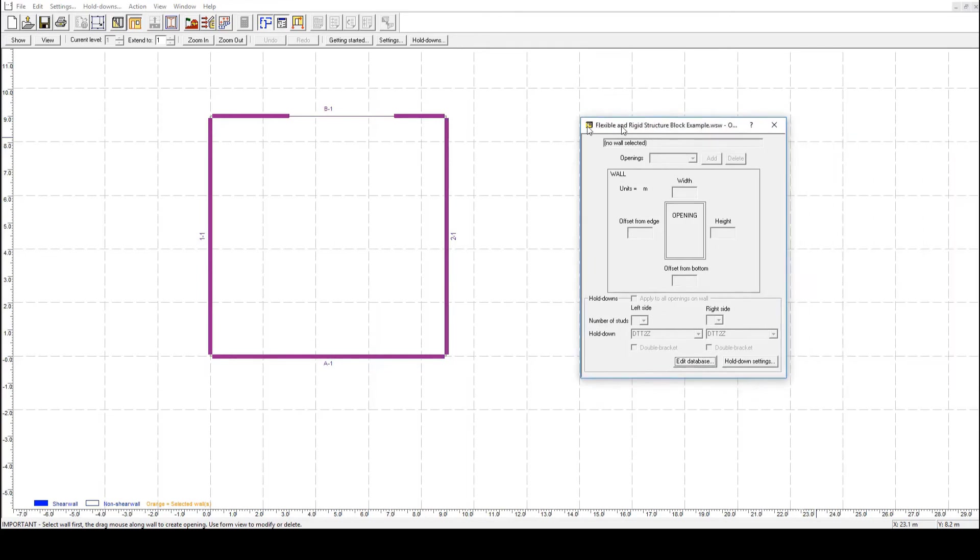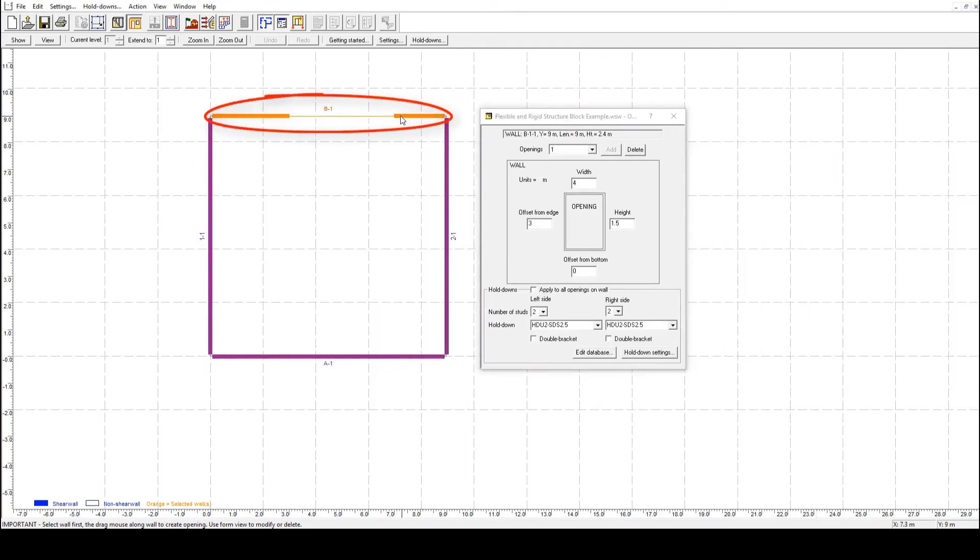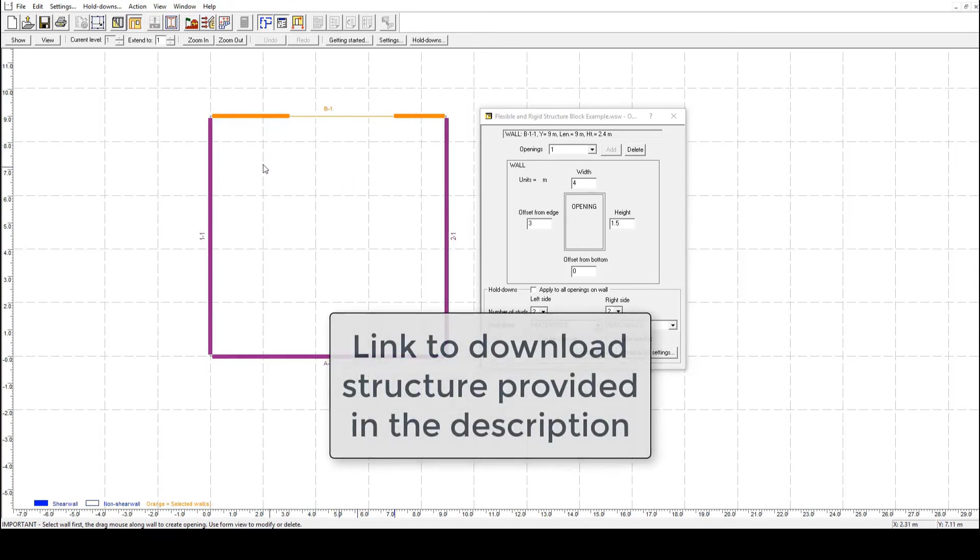The shear line at the top of the screen has one large opening, so it is less stiff and has lower strength than the bottom shear line. The link to download this structure is available in the description below.